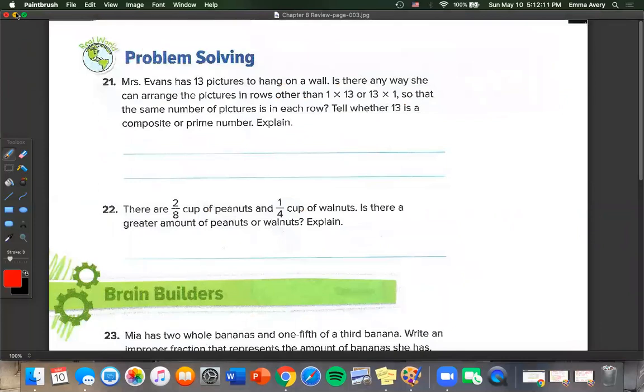Mrs. Evans has 13 pictures to hang on a wall. Is there any way she can arrange the pictures in rows other than 1 and 13, or 13 by 1, so that the same number of pictures are in each row? We could look at our prime and composite chart and see that 13 is prime. So no, there is no other way for her to arrange these pictures because 13 is prime. Its only factors are 1 and 13.